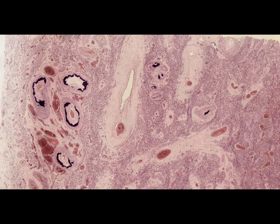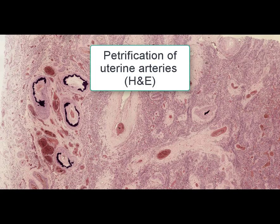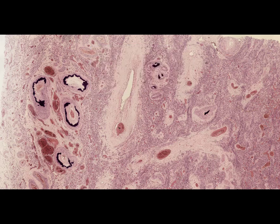On this slide we can see a histological section of the uterus. The stain is hematoxylin and eosin, and the name of the slide is petrification of the uterine arteries. Petrification, or calcification, or calcinosis, is a mixed degeneration associated with excessive deposition of calcium salts. There are three types of calcification: metastatic calcification, dystrophic calcification, and metabolic calcification.